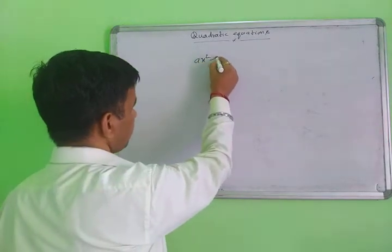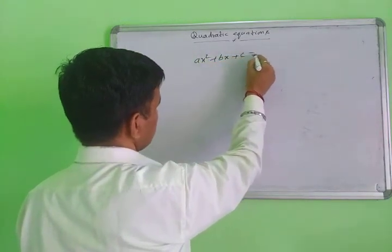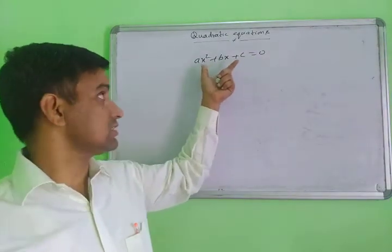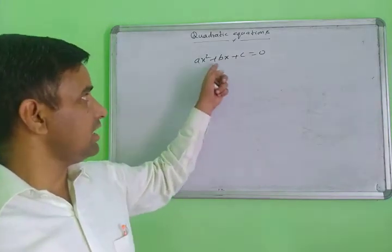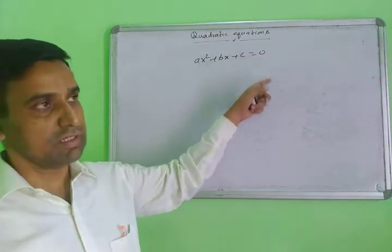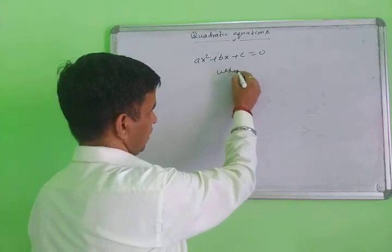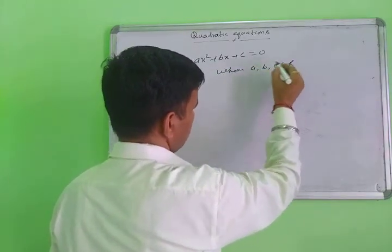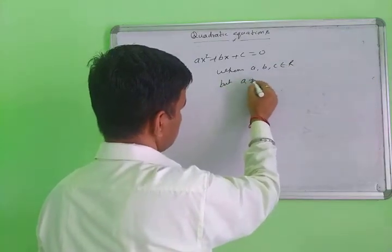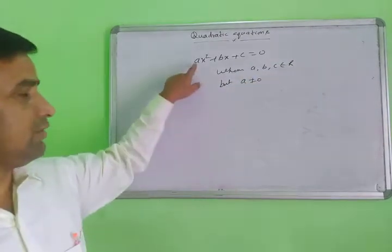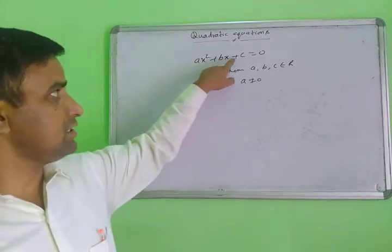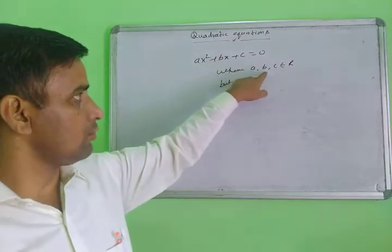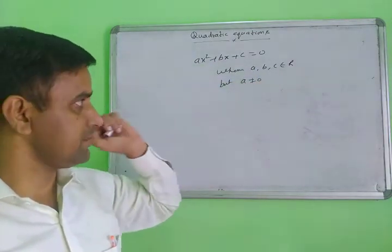The standard equation of the quadratic equation is ax² + bx + c = 0, where a, b, c are real numbers — that is, a, b, c belong to the real numbers — but a must not be equal to zero. b and c can be zero, but a will not be zero.